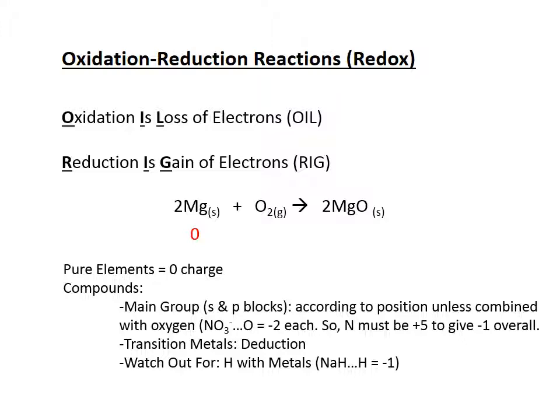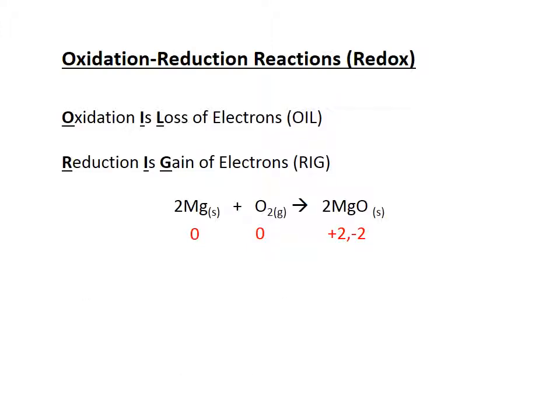So I assign magnesium a zero charge because it's an element by itself, and oxygen also gets zero. On the product side I have a simple binary ionic compound — magnesium oxide. Magnesium is in the plus two column, oxygen is in the minus two column, and their charges balance, so those are the accurate charges for magnesium and oxide in the binary ionic compound.